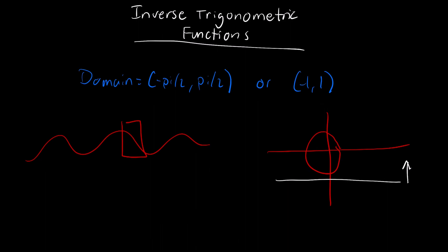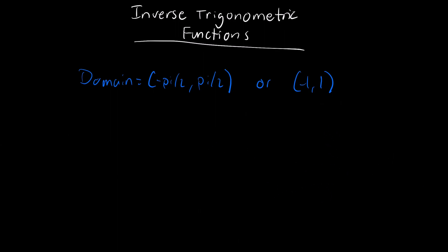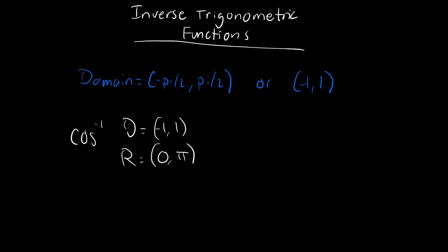Each different trig function has a unique domain and range to represent each different graph layout. For inverse cosine, the domain is negative 1 to 1, and the range is 0 to pi. This indicates that for cosine, the range moves through the first and second quarters. The quarters are 1, 2, 3, 4 — so cosine moves through the first two quarters.